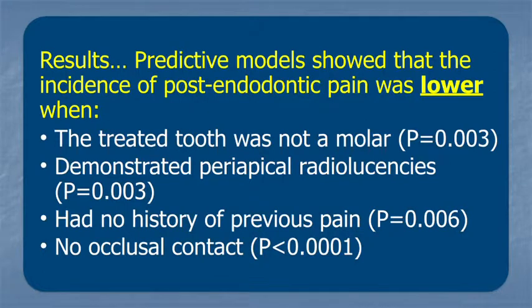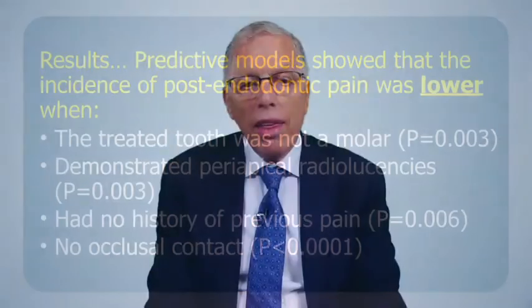The study also found that periapical radiolucencies, when present, seemed to be associated with a lower level of pain. We can assume from that information that the reason is that there was no longer vital tissue — live nerve tissue — in the root canal space.